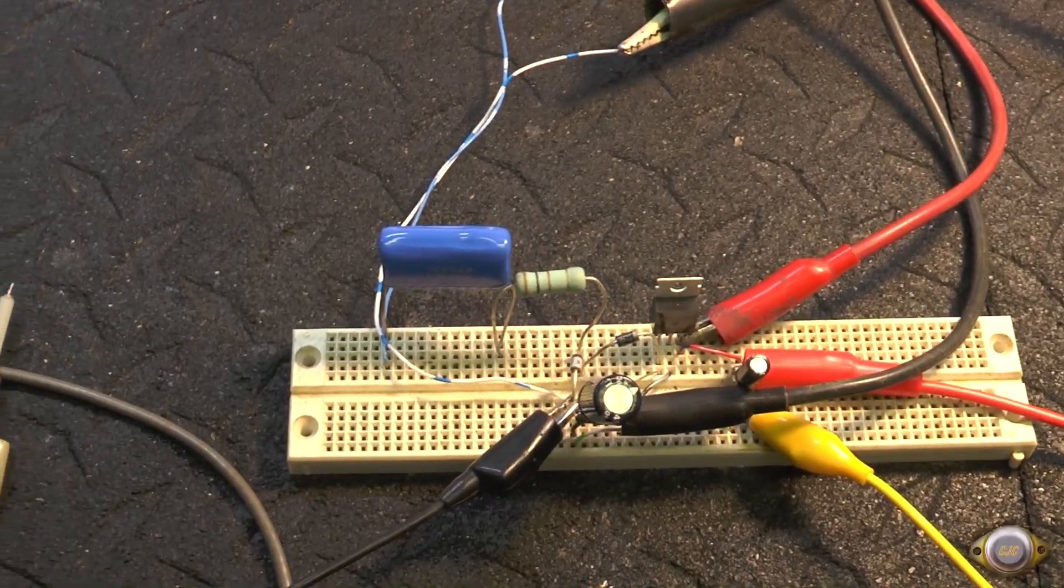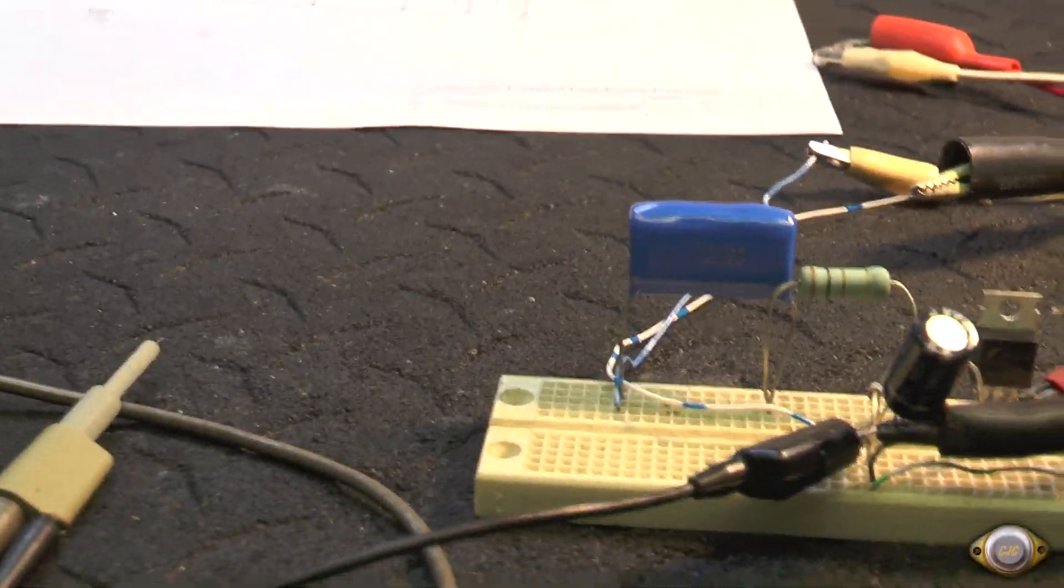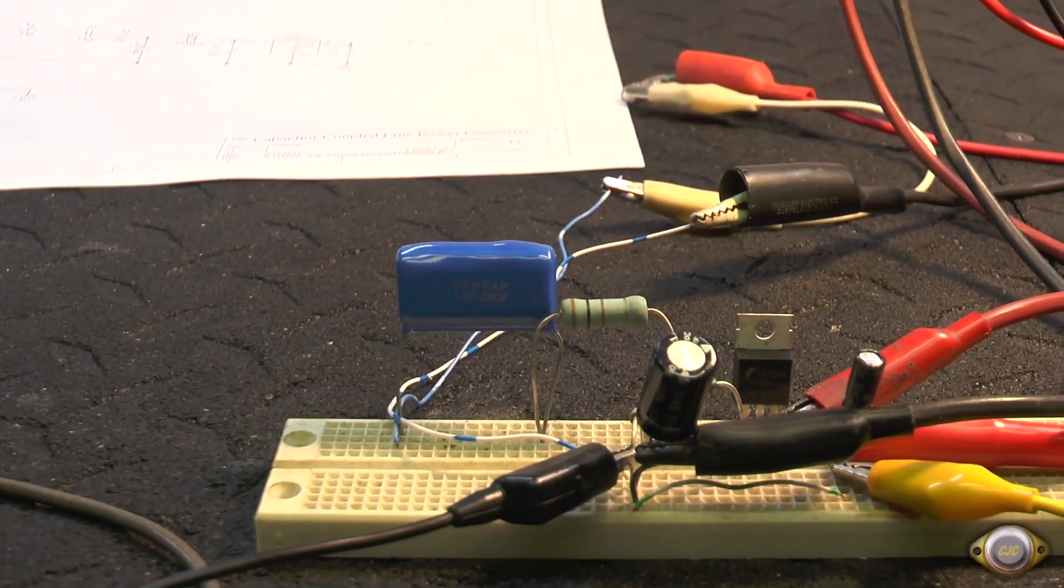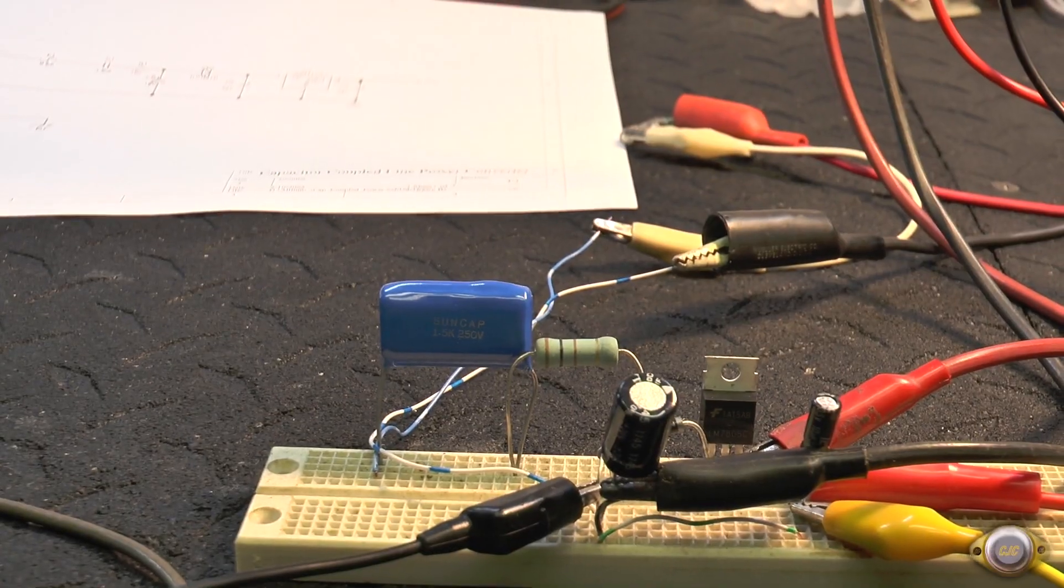Next I'm going to increase the input capacitor here. I'm going to double it. Right now it's 1.5 microfarads so I'm going to double it and then we'll see how much current we can get at 5 volts.